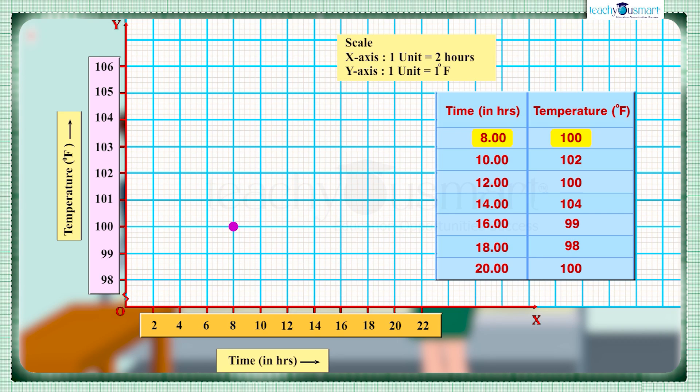Now we can plot each point as per the given information, and then join these points by line segments.